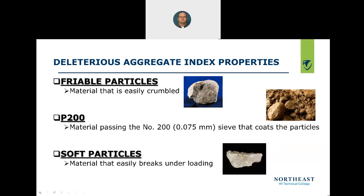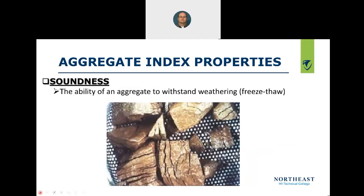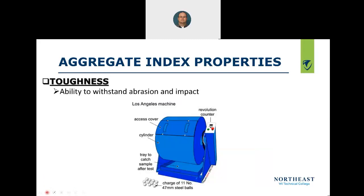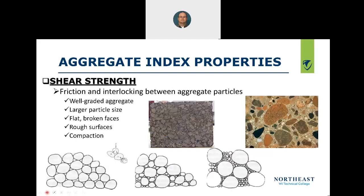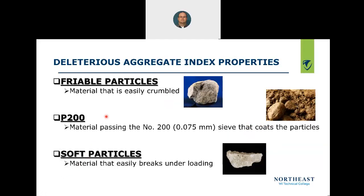To summarize the good aggregate index properties: we want soundness for freeze-thaw resistance, particle strength to resist breaking, toughness to resist abrasion and impact, good shear strength, and the ability to transmit compressive force. Now let's talk about what we don't want — deleterious aggregate index properties.